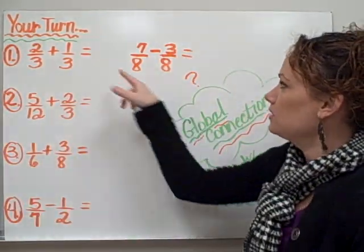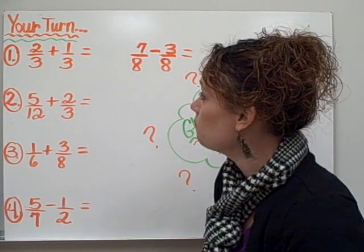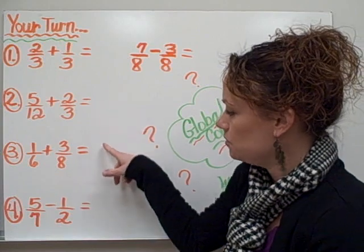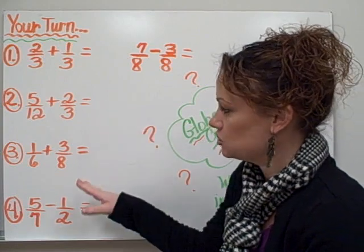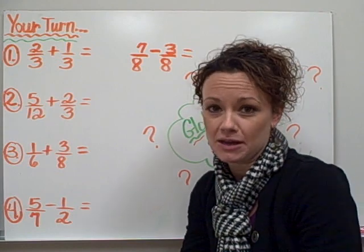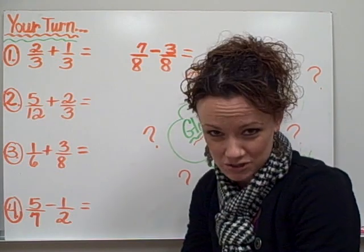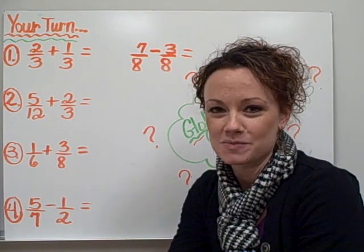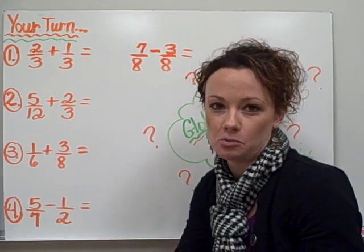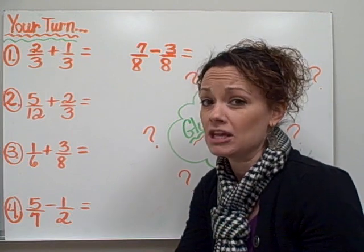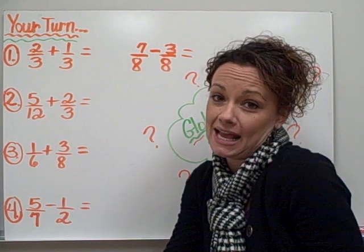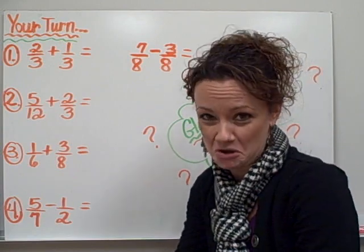For problem number 1, I've included two examples — one with addition and one with subtraction where the denominators are the same. And then for problems 2, 3, and 4, it's a mixture of addition and subtraction where the denominators are different, so you must remember to make equivalent fractions first. After you're done with your practice problems in box 3 of your homework sheet, return to box 1, Global Connections, and think about when you might use finding equivalent fractions and adding and subtracting fractions in real life, and put that example on your homework sheet.